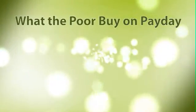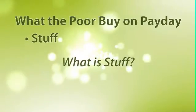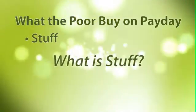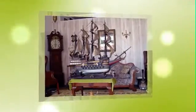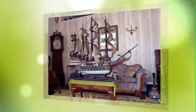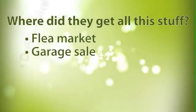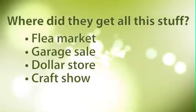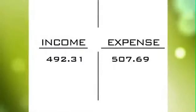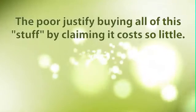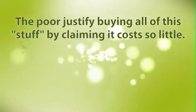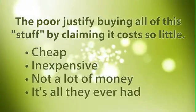Now let's look at what the poor buy on payday. The poor buy what I'm going to call stuff — inexpensive things that people buy that they don't really need to survive. You go into someone's house and you can't find any counter or tabletop space because of all the stuff on it. You can't find a single foot of white space on any wall because of all the stuff hanging on it. Where did they get this stuff? They bought it at the flea market, at the garage sale, at the dollar store, at the craft show. Their house and their car is full and cluttered with stuff. So income comes in on payday and then goes straight out the expense column to buy stuff. The poor really never educate themselves on assets and liabilities. They justify buying all this stuff by claiming it costs so little — yes, it was very cheap — but over the years, it's all they ever had.